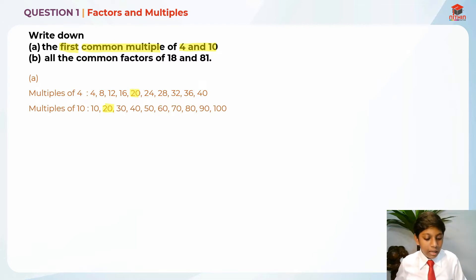Followed by the second common multiple is 40. So this is basically common multiples, but they only asked us for the first common multiple. So actually 40 is the wrong answer here. The answer should be 20.